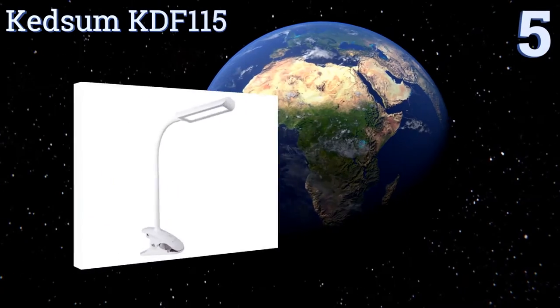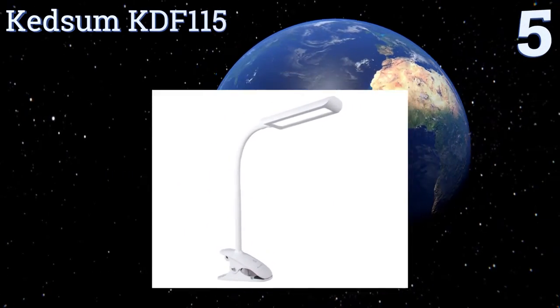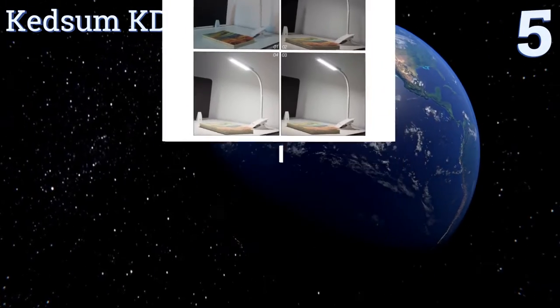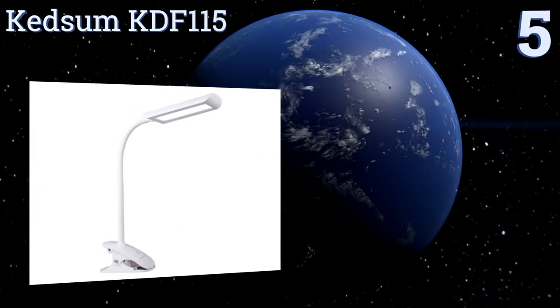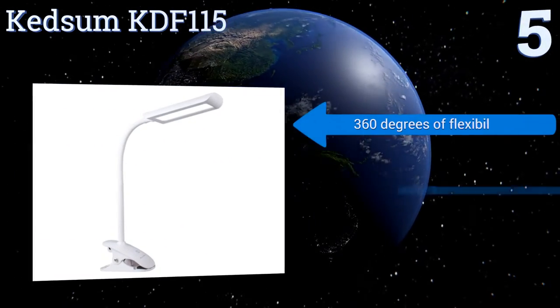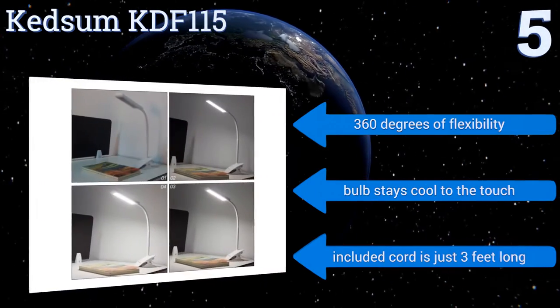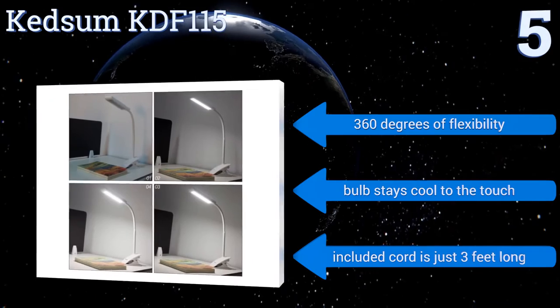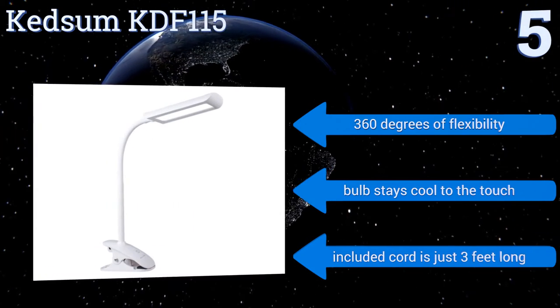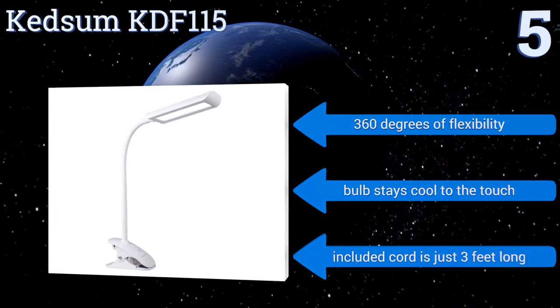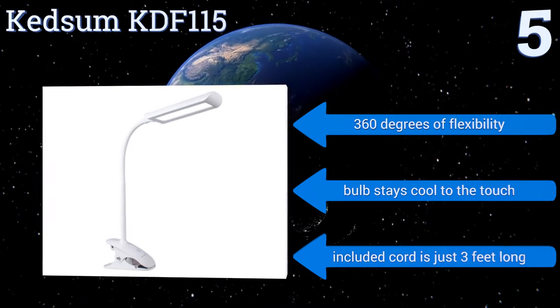Halfway up our list to number 5, the Ketsum KDF-115 offers a contemporary space-saving solution thanks to its strong adjustable clip that's ideal for music stands, beds, computer stations, and craft tables. It also can be used freestanding or wall-mounted to keep it off your work surface. It provides 360 degrees of flexibility and a bulb that stays cool to the touch, but the included cord is just 3 feet long.